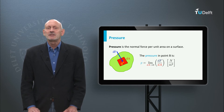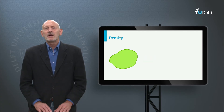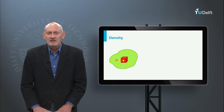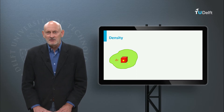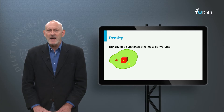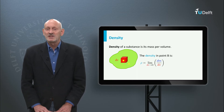Pressure has the unit newtons per square meter, or Pascal. Imagine we have a volume in which we define an incremental volume dV containing a point B. The mass of this volume dV is dM. The density of a substance is its mass per volume, and the density in point B is the limit of dV going to zero of dM over dV.